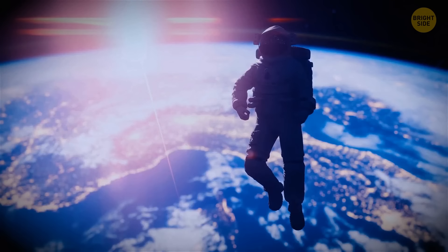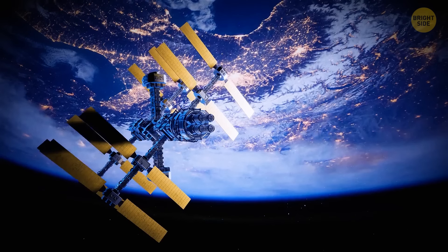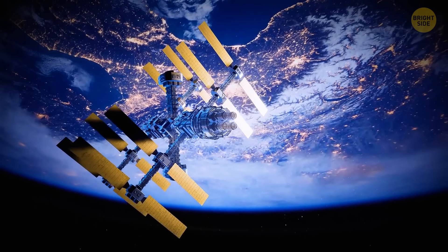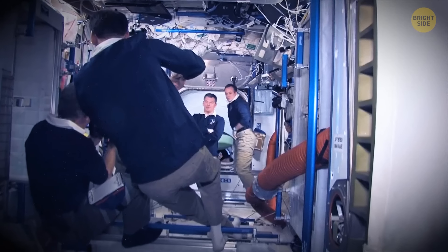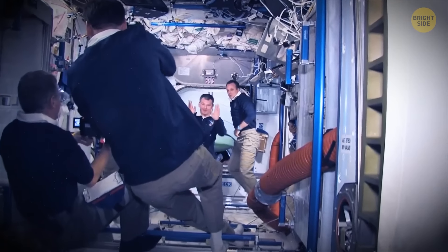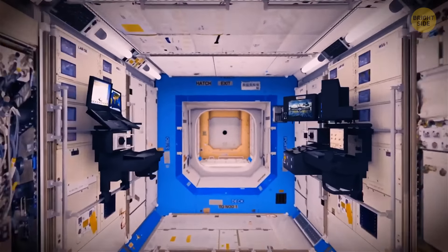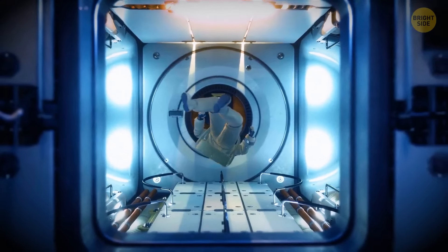Another myth is about zero gravity. That's not a thing. There's still some gravity hanging around the International Space Station, about 90% of what we feel on good old Earth. But astronauts get to float around because they're basically free-falling around the planet.